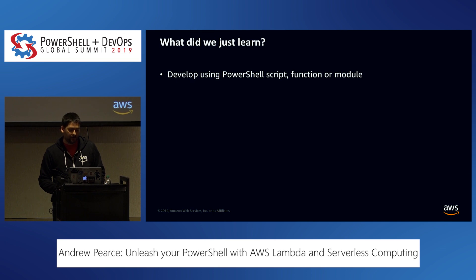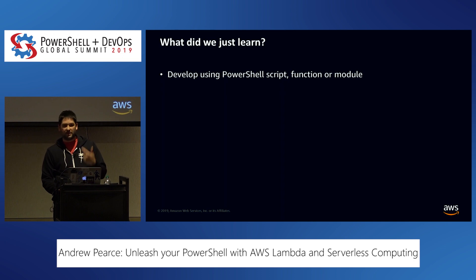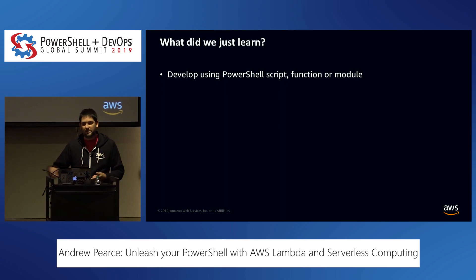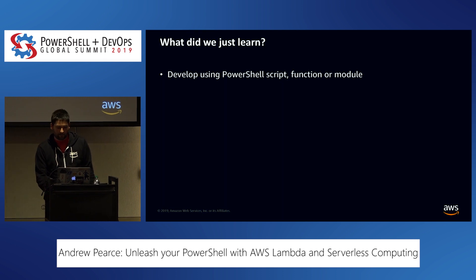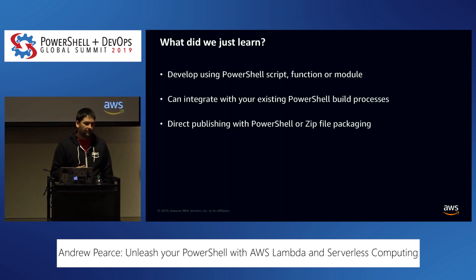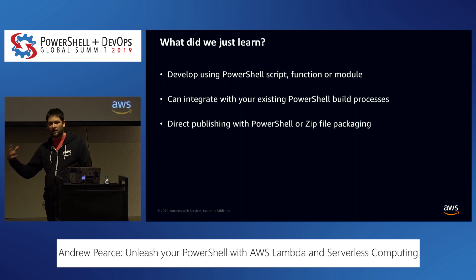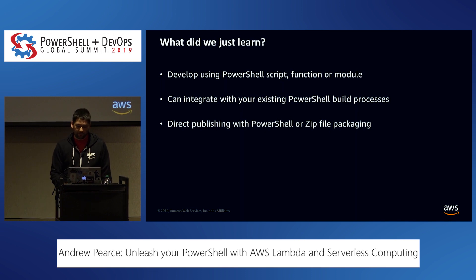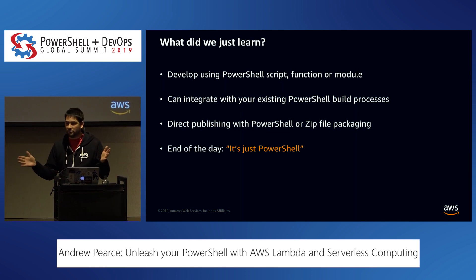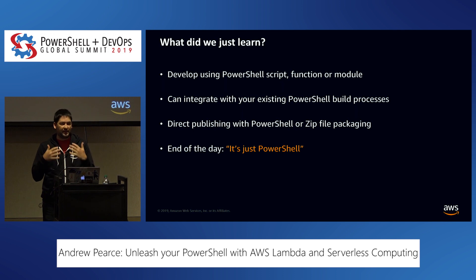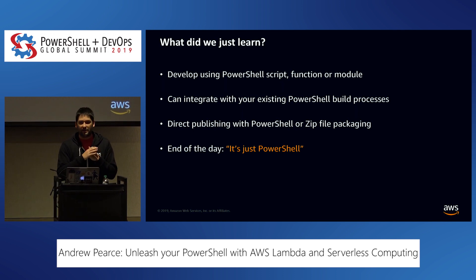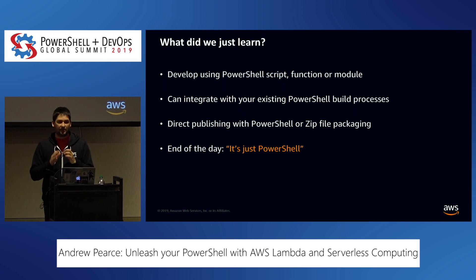PowerShell Lambda - it's just PowerShell. Nothing different to what you develop today, whether using scripts, functions, or modules. This will likely fit into your current build processes, whether local development or a CI/CD pipeline. The same things you do to test your PowerShell code can be used to test code you want to run in Lambda. You can directly publish from the PowerShell console to your account, or compress your archive to deploy through other mechanisms. You're not writing .NET applications even though it deploys one.